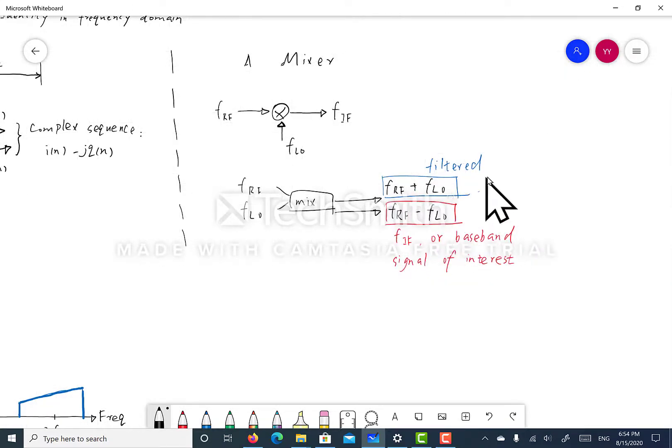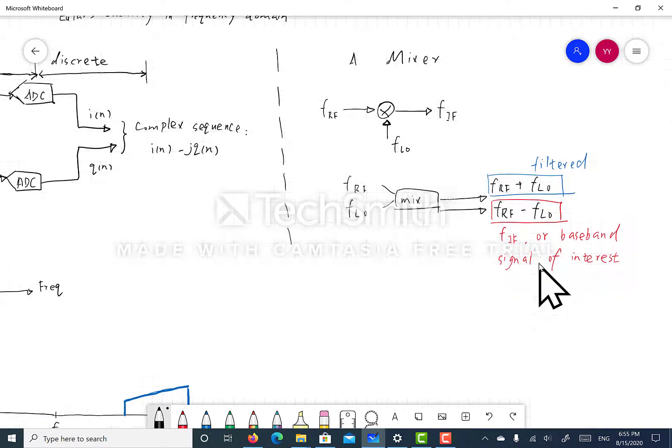As shown here, usually the summation of the two inputs, FRF plus FLO, gets filtered out because they're out of band. And what's remaining is really the difference between FRF and FLO. We also call this term FIF, and IF stands for intermediate frequency, also known as baseband signal. This is the signal of our interest and it typically contains the information that we need to decode.